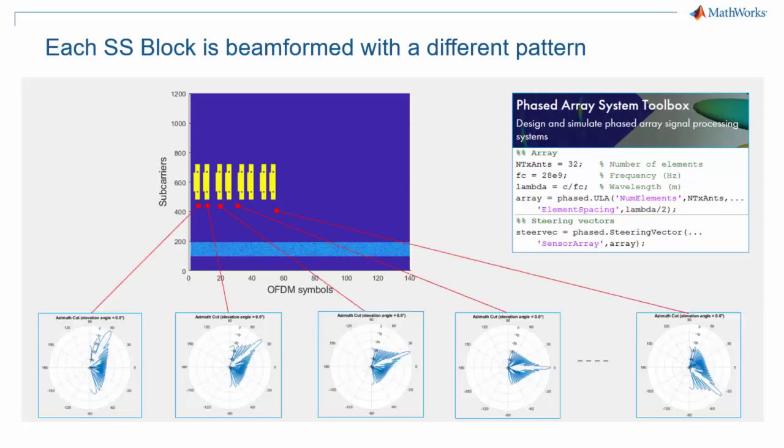Here a few blocks are shown, each targeting a few degrees in space. The code on the right shows how to generate those beamforming vectors with MathWorks Phased Array System Toolbox.